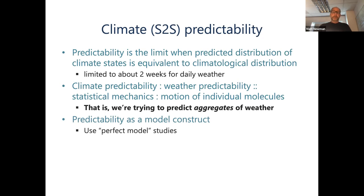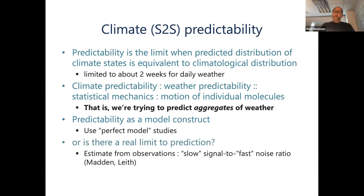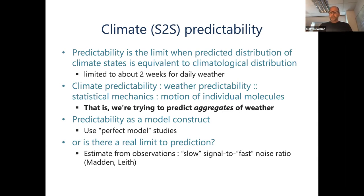There are two ways to approach this. You could do predictability as a model construct using perfect model studies. But then there's a more fundamental question about whether there are real limits even to S2S prediction and seasonal predictability. There's been a body of work going back particularly to Val Madden, Leith, and others, trying to estimate from observations some slow predictable signal on this weekly-to-seasonal timescale relative to fast weather noise. Weather noise is unpredictable — there's always going to be a lot of it. So these signal-to-noise ratios are going to typically be low, which is related to the fact that we have such low skill on average.